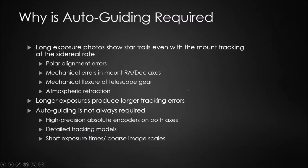So the first place to start is: why do we have to do this at all? Why is autoguiding required? The basic idea is that you have a telescope on a mount capable of tracking the sky at the sidereal rate. With an eyepiece, whatever you're looking at stays reasonably centered — you don't have to worry about it. But if you put a camera on instead of an eyepiece and want to take a long exposure photograph, you're going to immediately encounter some problems.